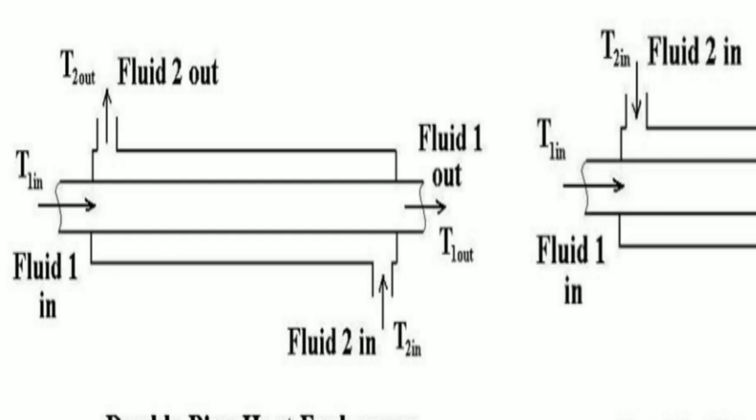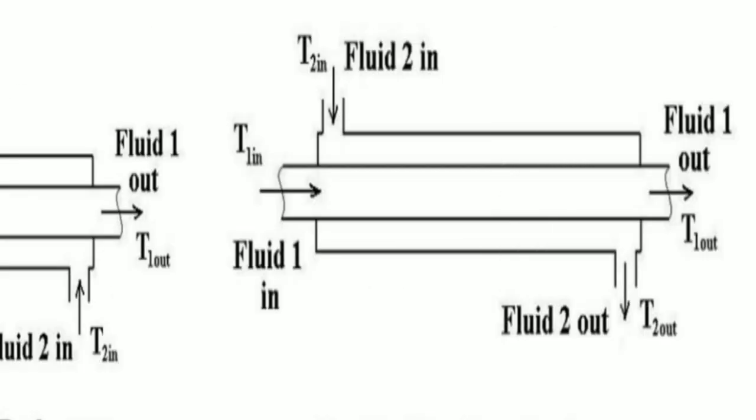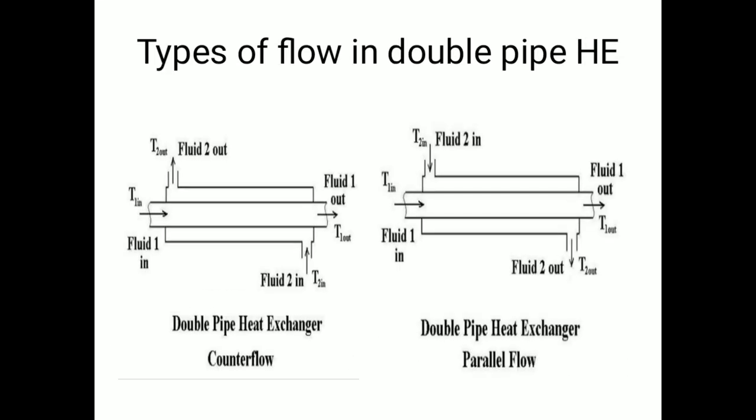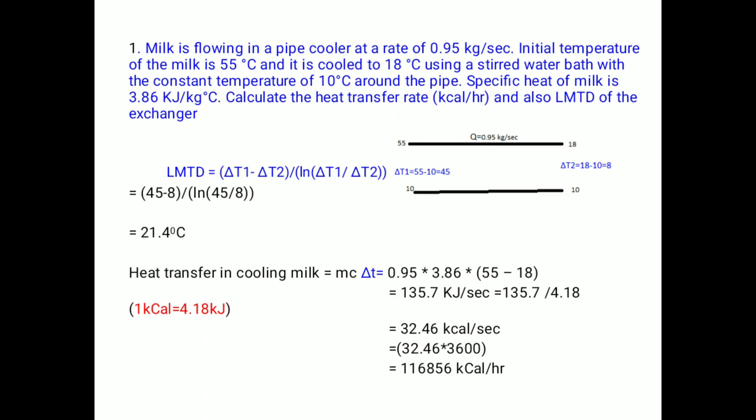In counter-current flow, the fluids also leave from opposite directions. In parallel flow, both fluids enter from the same direction and leave from the same direction. While calculating delta T1 and delta T2, you must identify whether it is a counter-current or parallel heat exchanger and mark the temperatures accordingly.